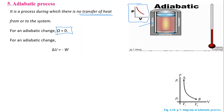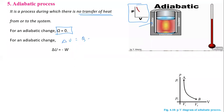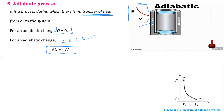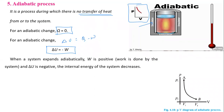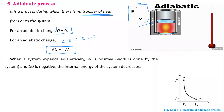Since ΔU equals Q minus W and Q is zero, we write ΔU equals minus W. When the system expands adiabatically, work done by the system is positive, so ΔU is negative — the internal energy of the system decreases.